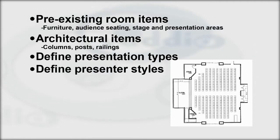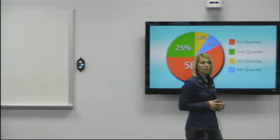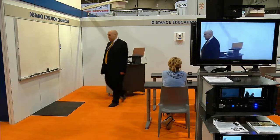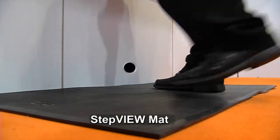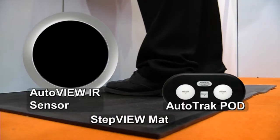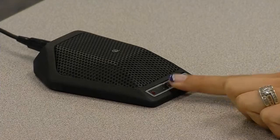Define the various styles of presenters using the room and how they might present using the presentation area and tools. You could have a presenter standing at a podium, constantly walking around, or even someone who will be sitting or using a wheelchair. Discuss the experience levels of the presenters, as this will help determine the type of presentation controls. Define how students and audience members will be included, and whether there is a need for student-to-teacher interaction during presentations.